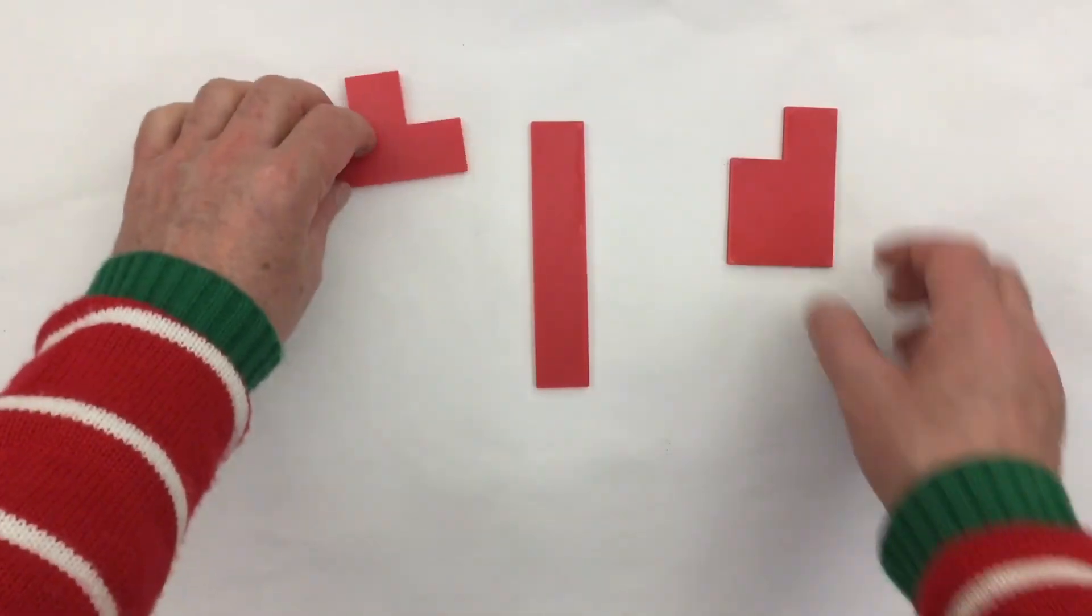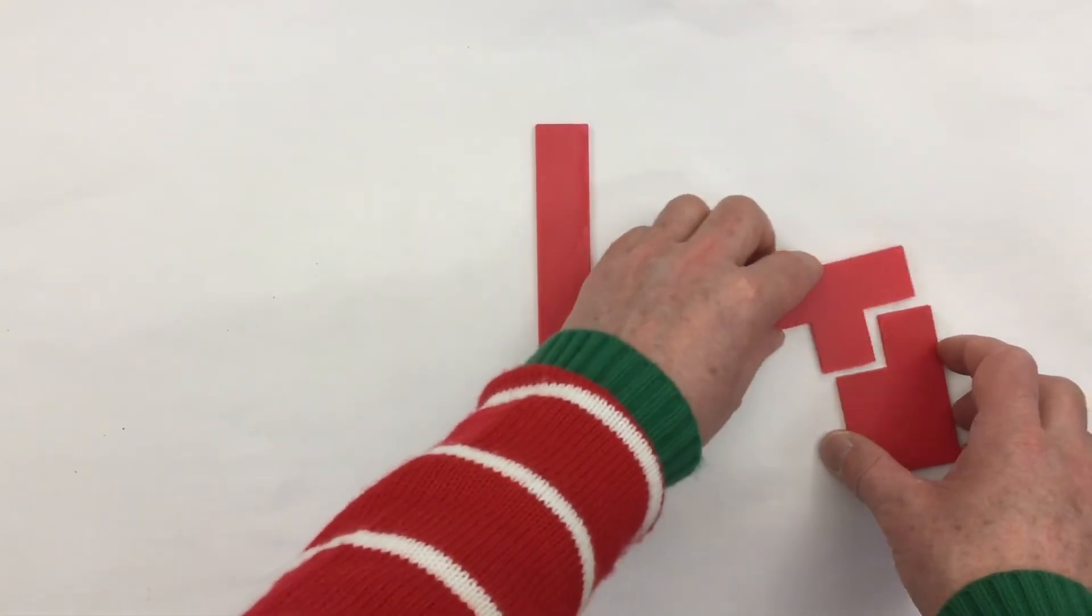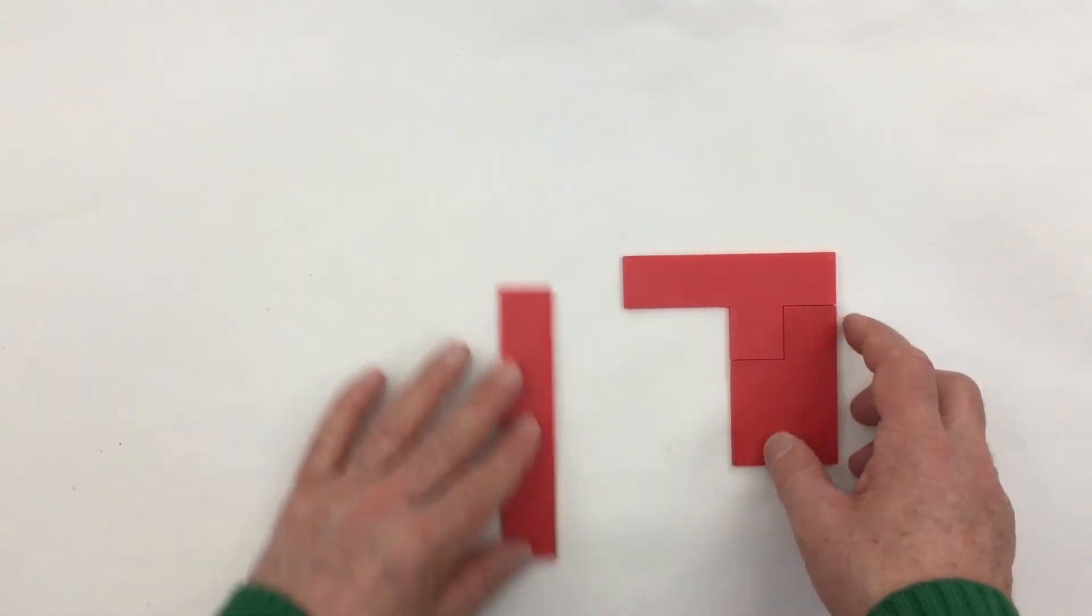And so by flipping and turning, you can start to make pentominos fit together.